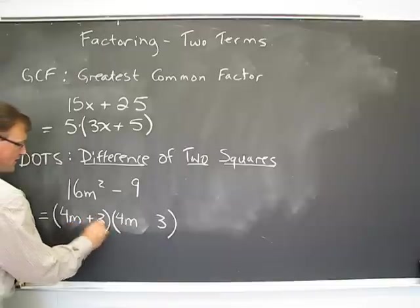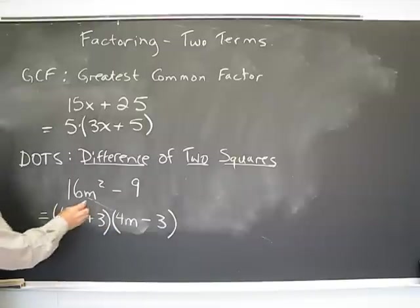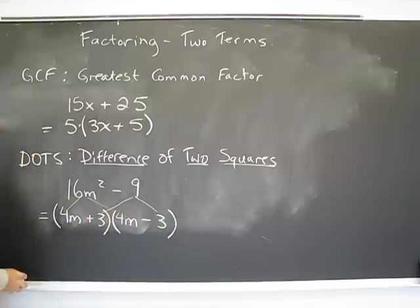3 times 3 is equal to 9. Now the thing is, you're going to have opposite signs in both of those brackets. Despite the fact that these two multiply to give the 16, and these two multiply to give the 9, it has to be a negative 9.